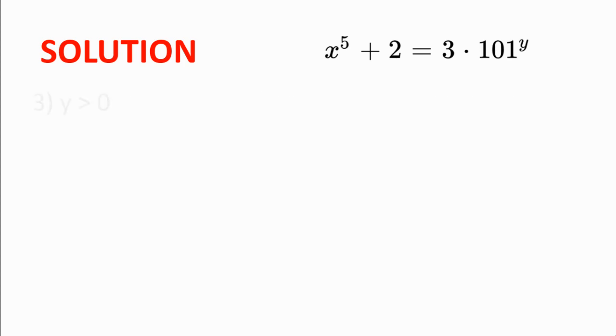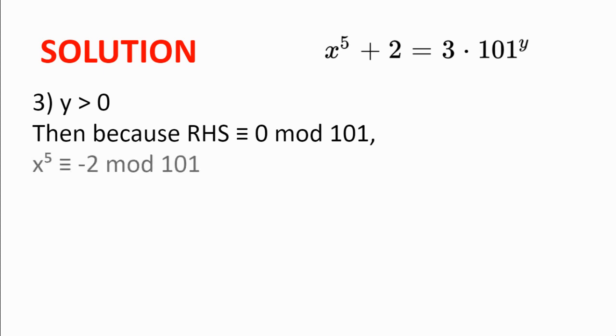We'll now move on to the final case, which is y is greater than 0. Then we see that the right hand side is a multiple of 101. And so it's congruent to 0 modulo 101. And so x to the power of 5 is congruent to 0 minus 2, which is minus 2 modulo 101.